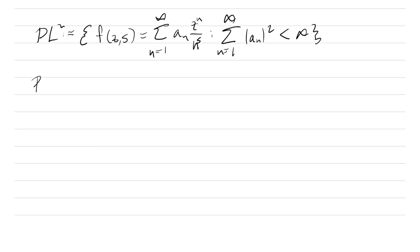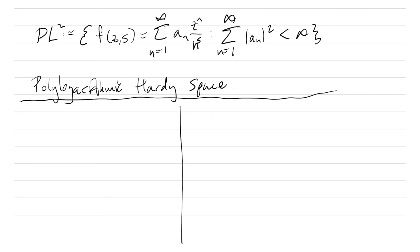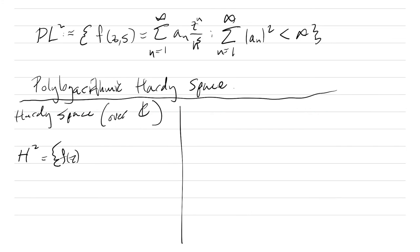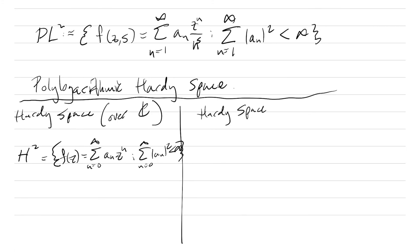To put this in context, this is the polylogarithmic Hardy space. There are two other well-studied spaces: the classical Hardy space H2, which consists of functions F(Z) = sum of a_n Z^n with the sum of |a_n|² finite (indexed from zero to infinity); and the Hardy space of Dirichlet series, studied by people like Hedenmalm and John McCarthy. This is usually written with a script H2 to distinguish it from the regular Hardy space.